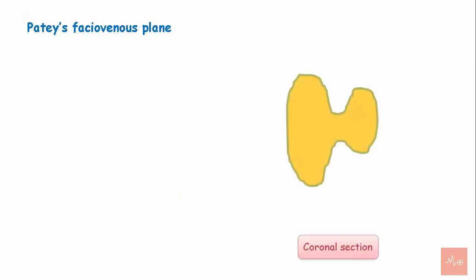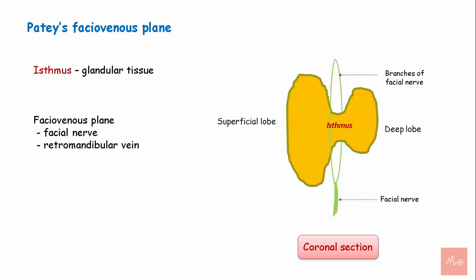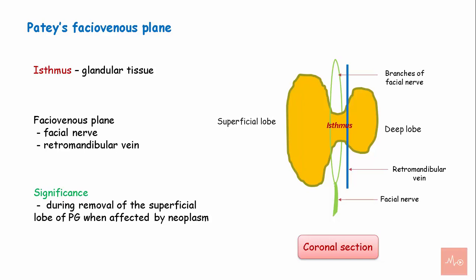The parotid gland has a large superficial lobe and a small deep lobe, connected to each other by a mass of glandular tissue called the isthmus. The plane between the lobes is where the facial nerve and the retromandibular vein pass. This plane is significant because surgeons use knowledge of it while removing the superficial lobe of the parotid gland when affected by a tumor, in order to protect the nerves and the vein.